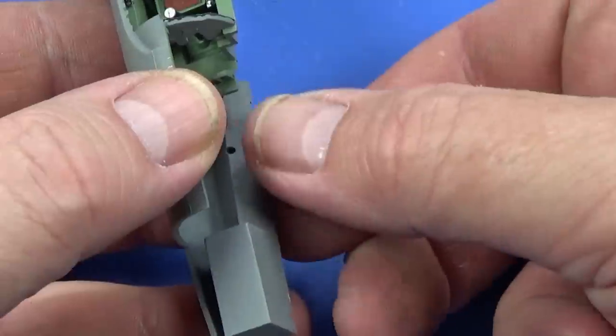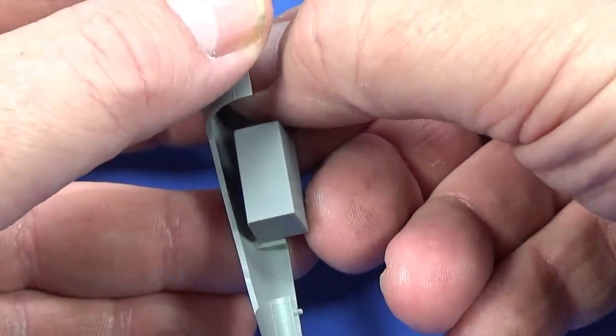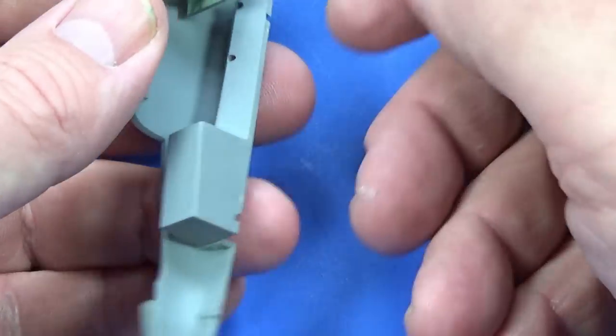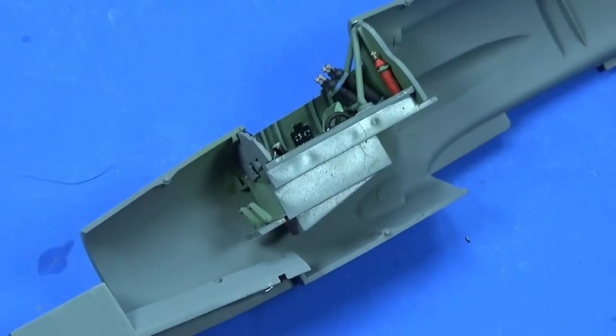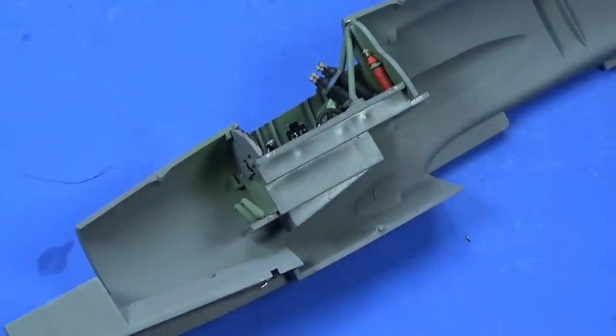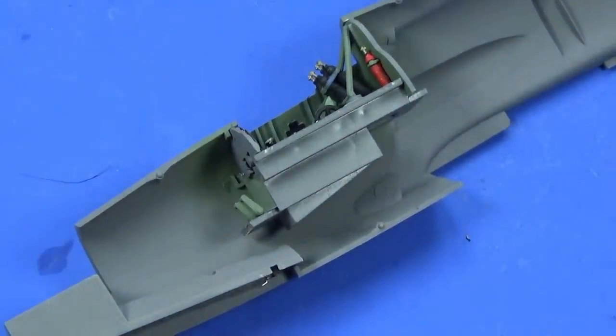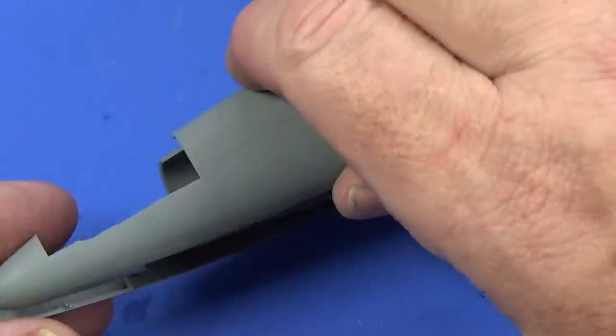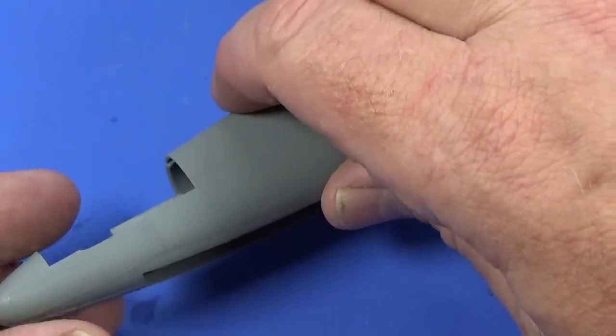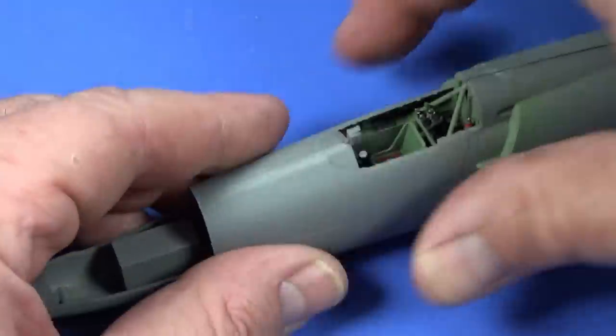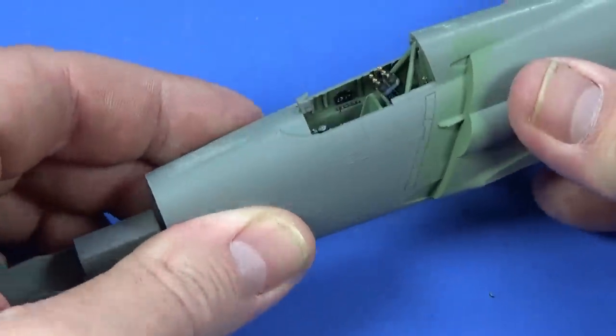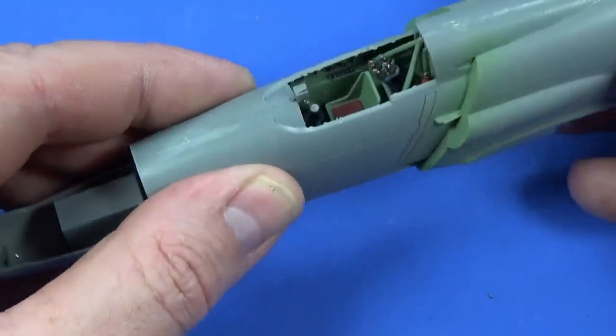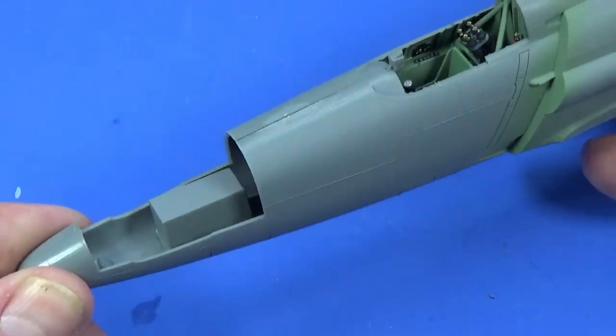Next the undercarriage bay goes in the nose like so, which sits on the top of this support. Double check, yep. With that done the two halves can go together. The two halves of the fuselage can go together. It fits so nicely. There we go, just tack it up and run some extra thin around and leave it to dry.